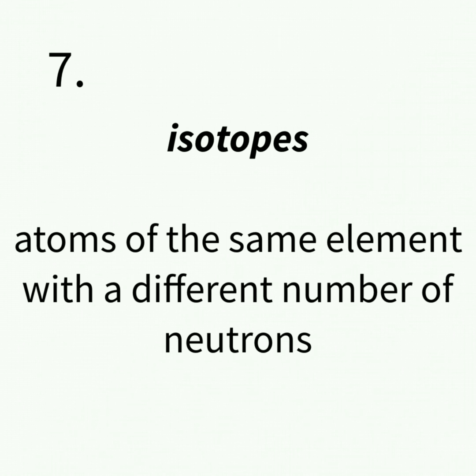Isotopes are atoms of the same element but with different numbers of neutrons.